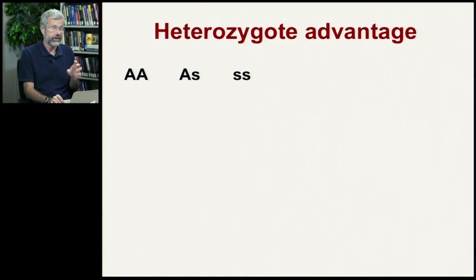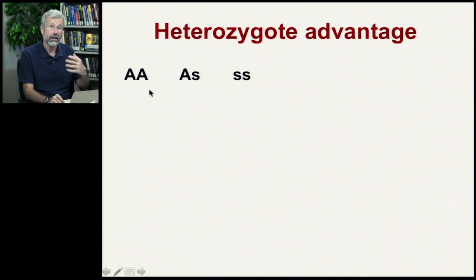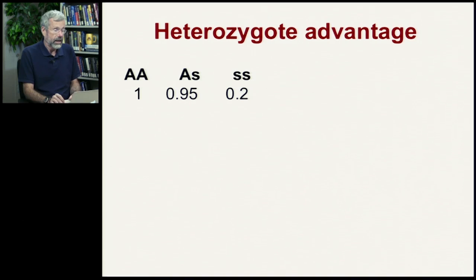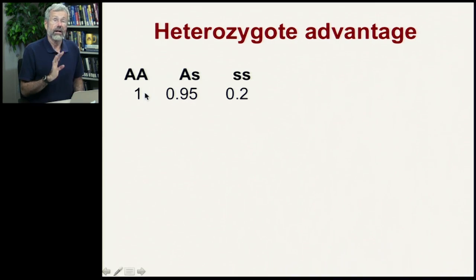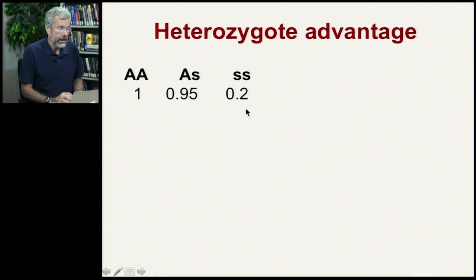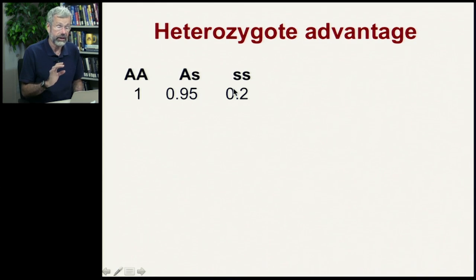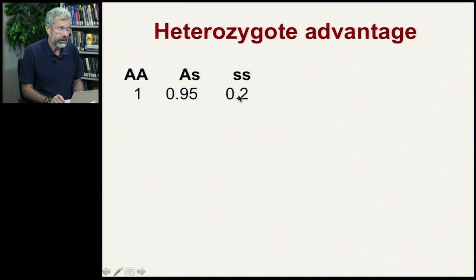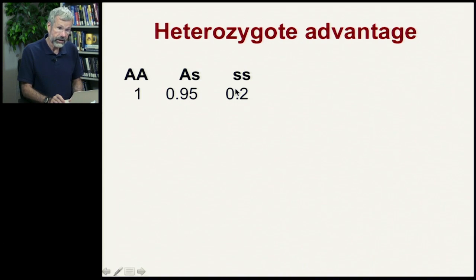Let's compare relative fitness of the three different genotypes. Capital A is the healthy allele — you don't get the sickling — and little s is the sickling allele. In most parts of the world, the healthiest genotype is homozygous AA. Homozygous for sickling gets full-blown sickle cell anemia, with only 20% the average reproductive success of normal genotypes. The heterozygote is pretty close to normal, but the big difference is between the sickling homozygote and the other two.